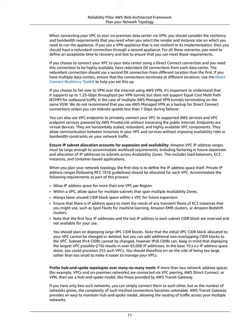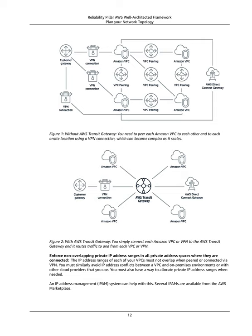Prefer hub-and-spoke topologies over many-to-many mesh: if more than two network address spaces — for example, VPCs and on-premises networks — are connected via VPC peering, AWS Direct Connect, or VPN, then use a hub-and-spoke model like those provided by AWS Transit Gateway. AWS Transit Gateway provides an easy-to-maintain hub-and-spoke model, allowing the routing of traffic across multiple networks. Enforce non-overlapping private IP address ranges in all private address spaces where they are connected. The IP address ranges of each of your VPCs must not overlap when peered or connected via VPN. You must also avoid IP address conflicts between a VPC and on-premises environments. An IP address management (IPAM) system can help with this, and several IPAMs are available from the AWS Marketplace.